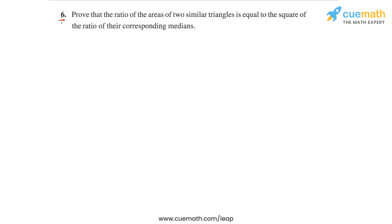In question 6 of this exercise, we have to prove that the ratio of the areas of two similar triangles is equal to the square of the ratio of their corresponding medians.